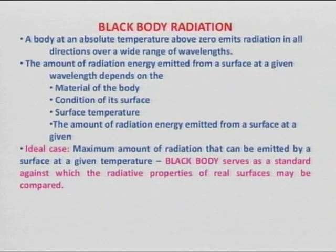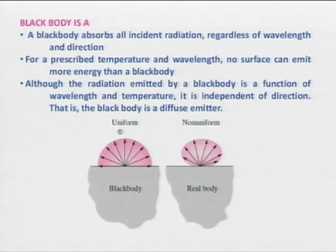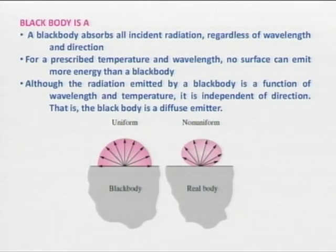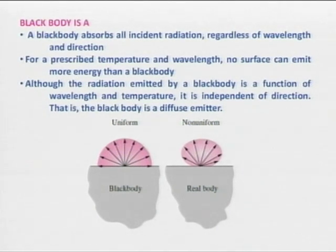Ideal cases are always our references. The body which gives the maximum emissive power — that is the standard — and that is the black body. A black body absorbs all the incident radiation regardless of wavelength and direction; it has no preference for wavelength and direction. For a prescribed temperature and wavelength, no surface can emit more energy than the black body.